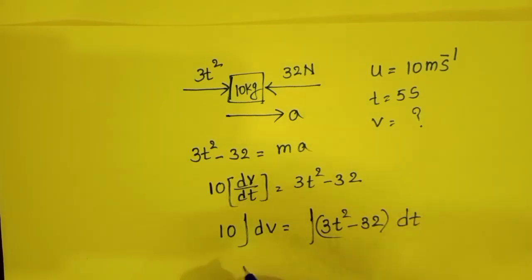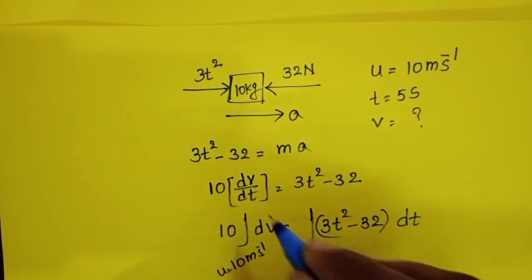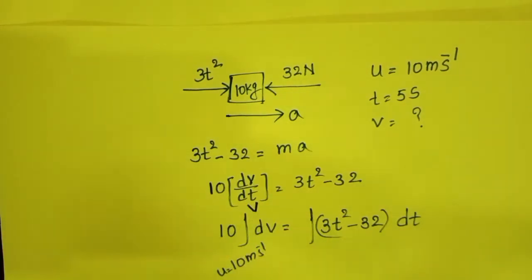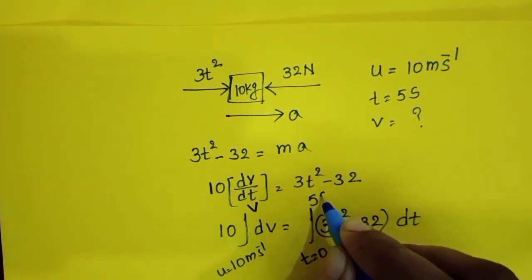With limits from 10 m/s to final velocity v, and initially time equals 0. After 5 seconds, we have to find out the velocity.